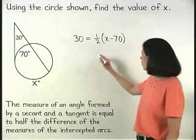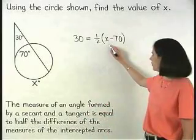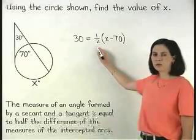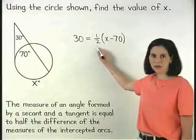Now solving for x in our equation, our first step is to get rid of the one half by multiplying both sides of the equation by 2.